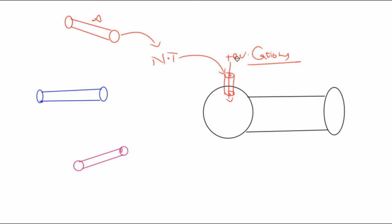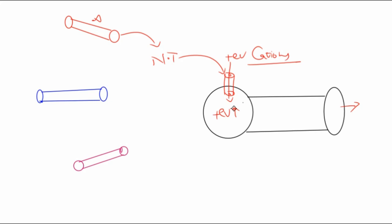When positive cations move inside this neuronal cell, the positive charge increases inside, the cell becomes depolarized, and it will start transmitting an impulse that will result in the release of another neurotransmitter from its end. So Neuron A is releasing a neurotransmitter that is basically excitatory in nature.